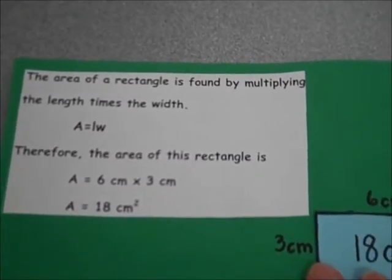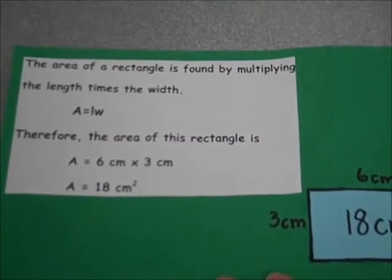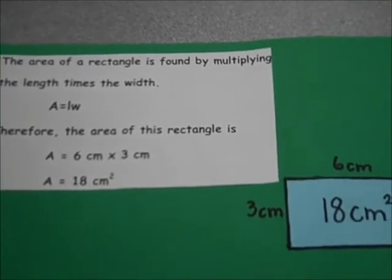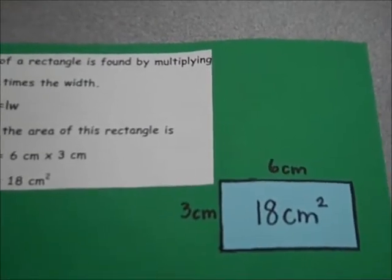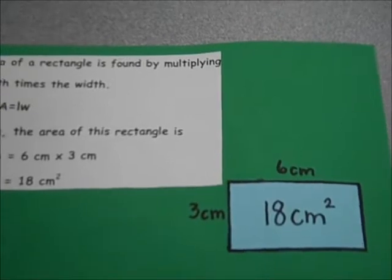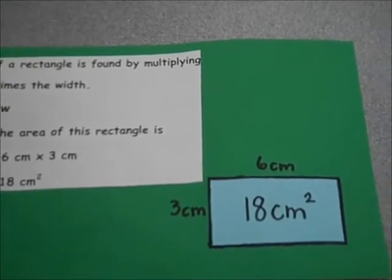The area of the rectangle is found by multiplying the length times the width. Therefore, the area of this rectangle is six centimeters by three centimeters. The total area is equal to 18 centimeters squared.